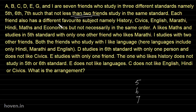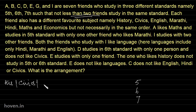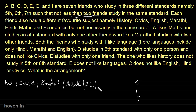Each friend also has a different favorite subject — namely history, civics, English, Marathi, Hindi, Maths and Economics. Let us write those subjects also here: starting with history, then civics, then English, then Marathi, after that Hindi, after that Maths, and finally Economics. So the friends are not studying the same subject.